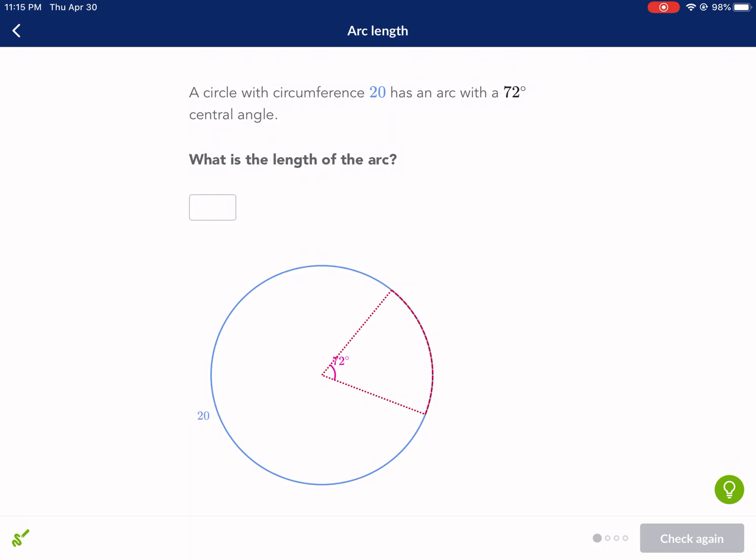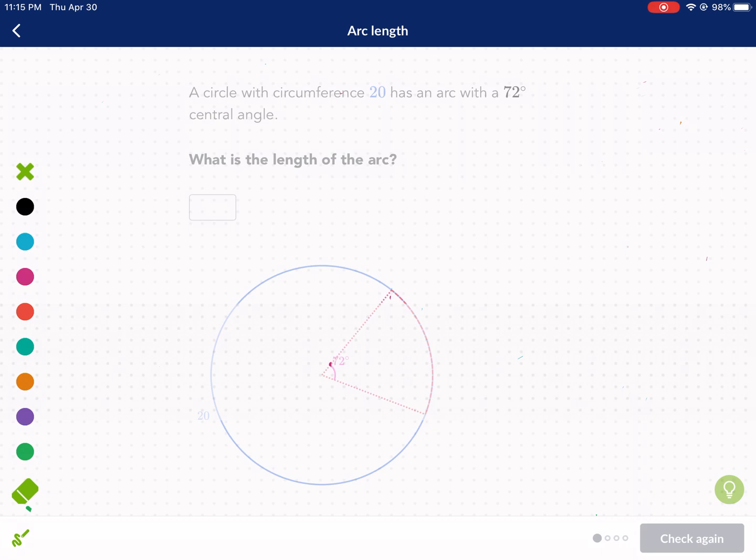A circle with circumference 20 has an arc with a 72 degree central angle. What is the length of the arc? Before we begin, we need to understand something about arc length. Even though it gives us a circumference for this problem, we need to know that circumference equals 2 pi times a radius.